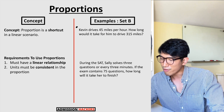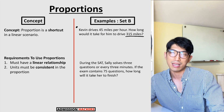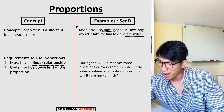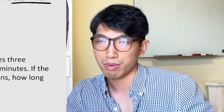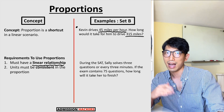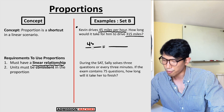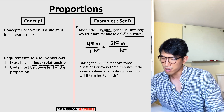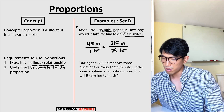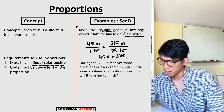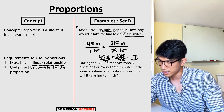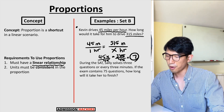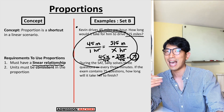Let's apply this to examples. First: Kevin drives 45 miles per hour. How long would it take him to drive 315 miles? We check for a linear relationship — 'per hour' confirms it. So we set up the proportion: 45 miles over 1 hour equals 315 miles over x hours. Cross multiplying gives 45x equals 315. Dividing both sides by 45 gives x equals 7. The answer is seven hours. You'll be able to use a calculator for bigger numbers.